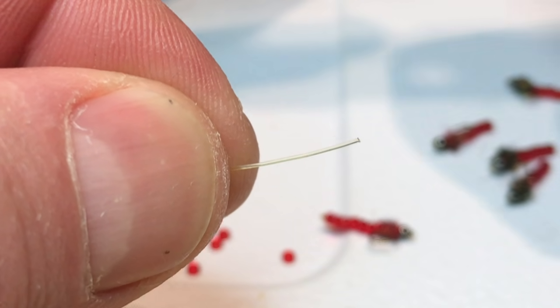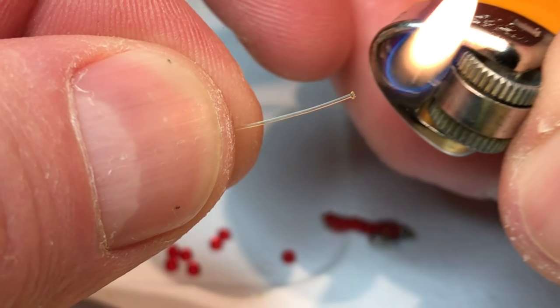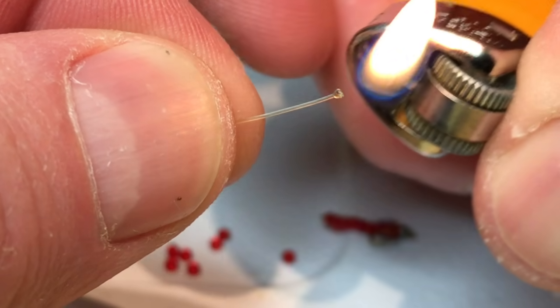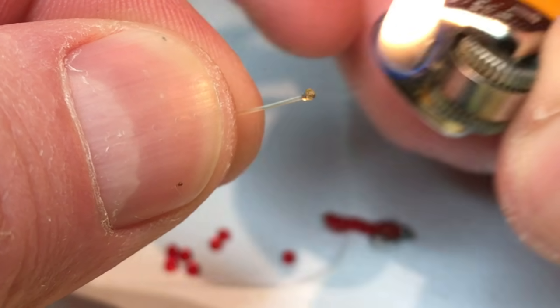Start by melting the end of a 10 to 15 pound spare piece of monofilament. Be careful not to actually light it on fire and burn it all the way to your thumb. It needs to be big enough to hold on the beads though.